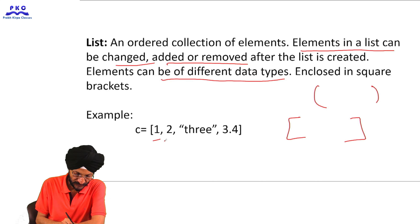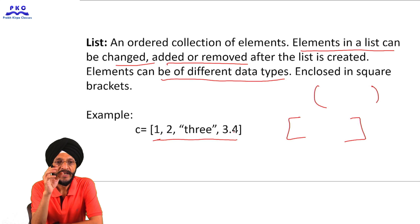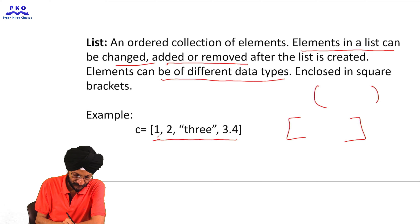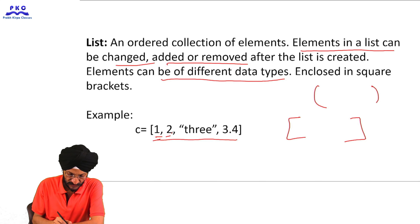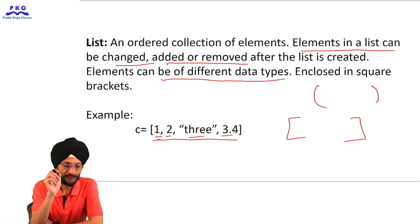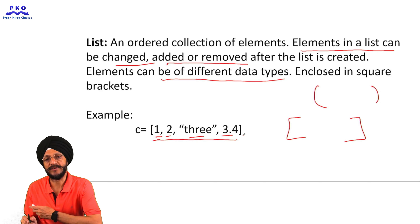For example, elements 1, 2, 3, and 3.14 — where 1, 2, 3 are integer values, 'string' is a string, and 3.14 is a floating value — are enclosed in square brackets.